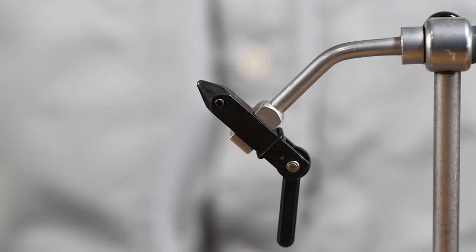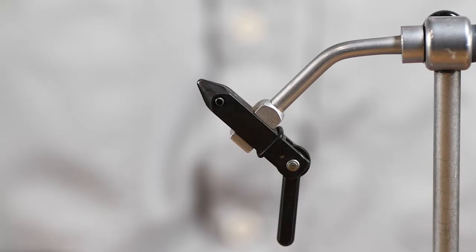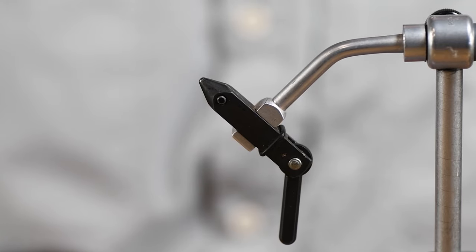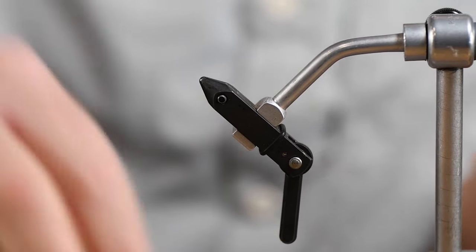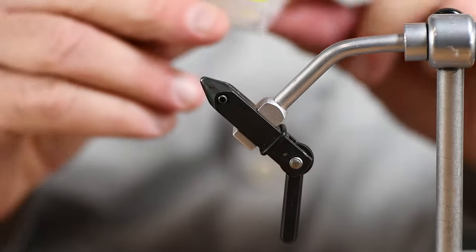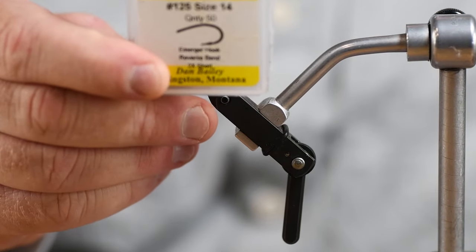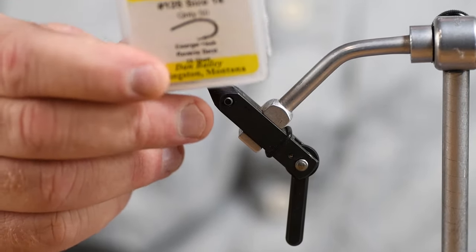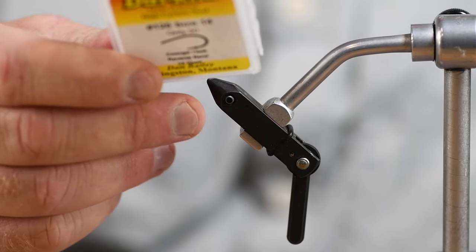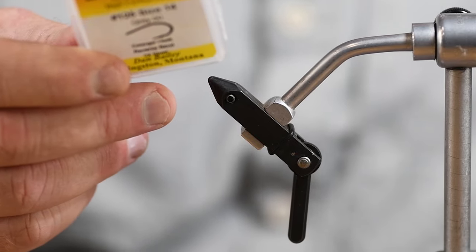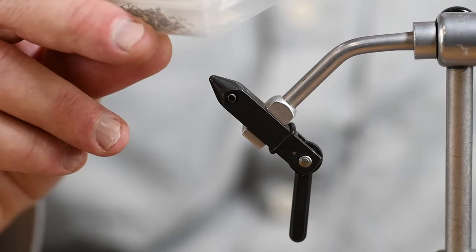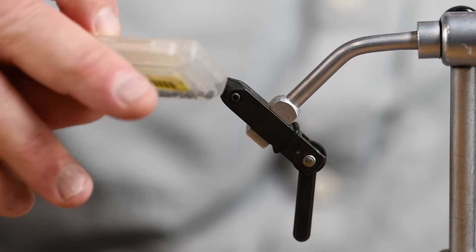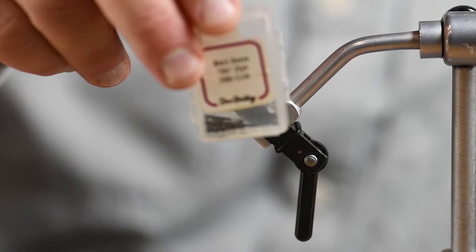Alright, so for tying the March Brown Nymph, or at least the March Brown Nymph I like to tie that I've had success with in our local streams and rivers in the west, I'm going to use a size 14 hook. This isn't a nymph hook, it's a curved hook. I just really like the shape of this curved shank hook. Some people will sometimes use a scud hook or a straight shank, whatever you'd like, but I prefer the emerger hook. And I'm going to be using a 7/64 black bead for the bead head here.